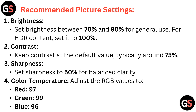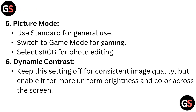For color temperature, adjust the RGB values to red 97, green 99, blue 96. For picture mode, use Standard for general use, switch to Game Mode for gaming, and select sRGB for photo editing.